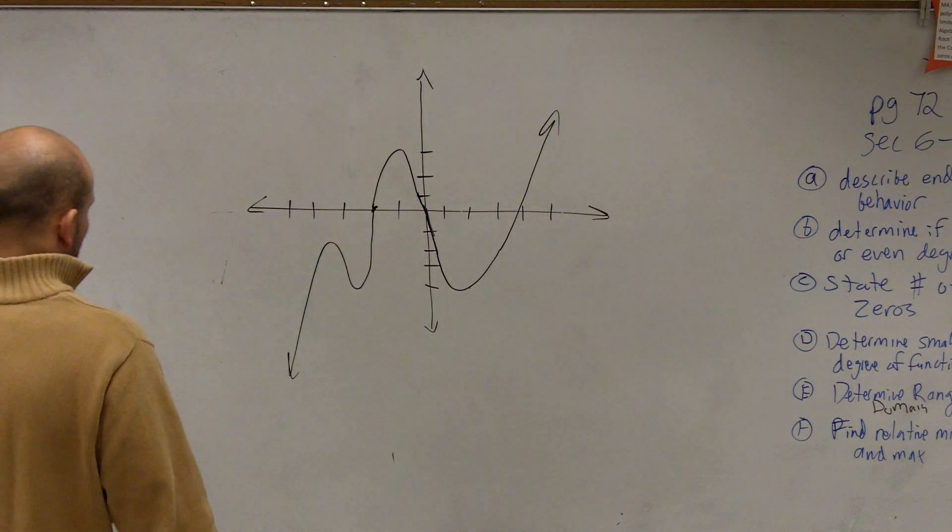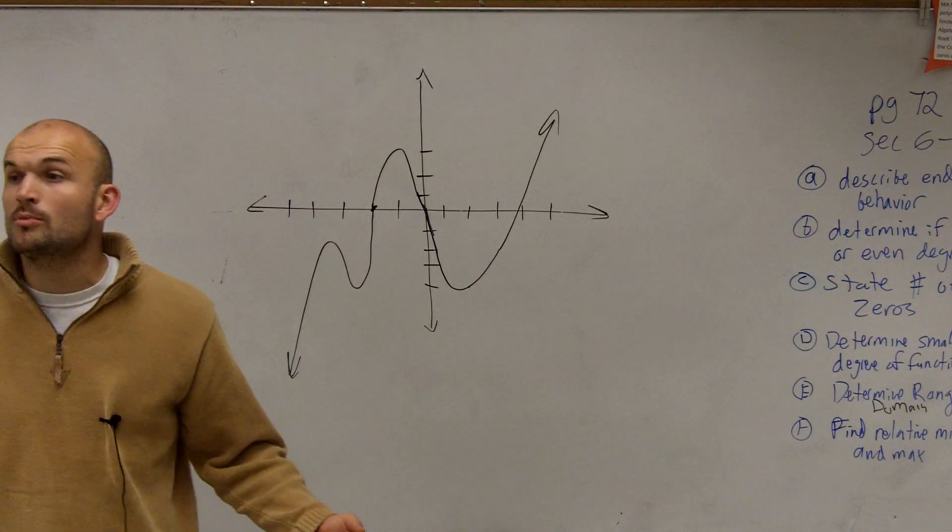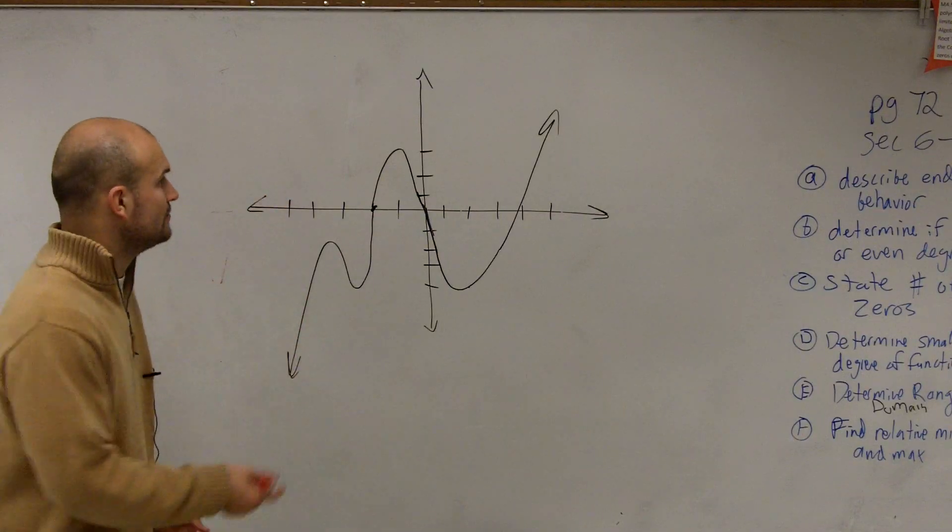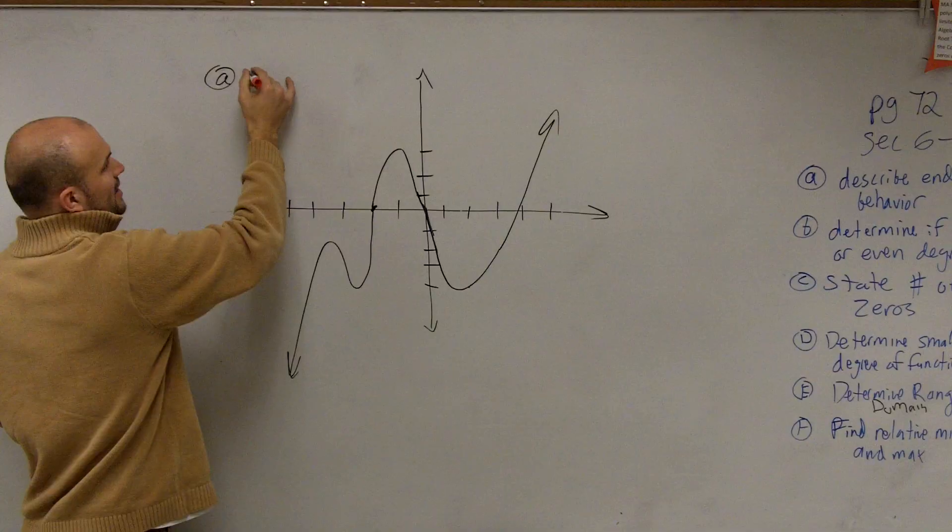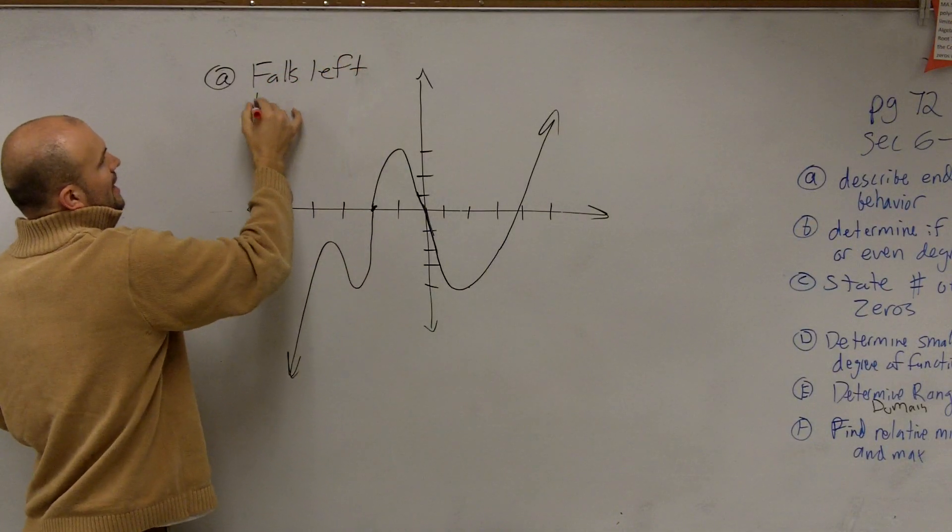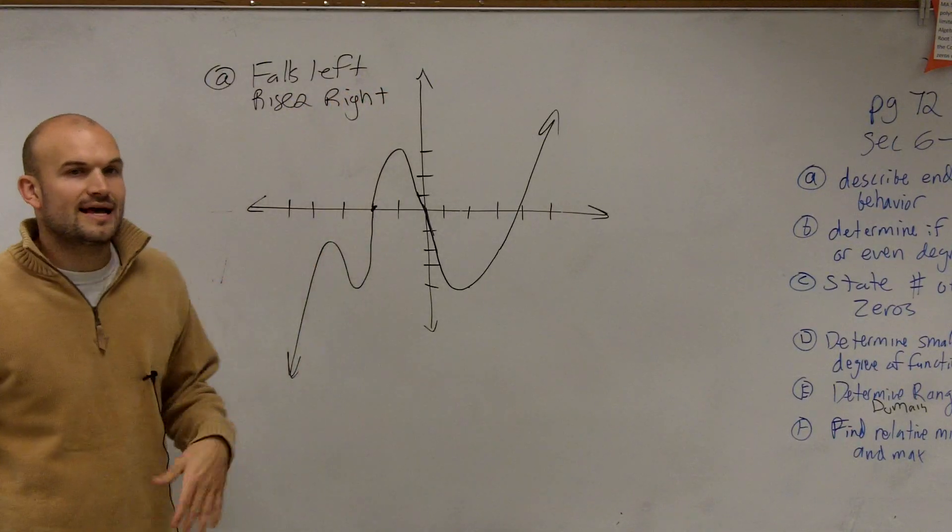So for a problem like this, you guys didn't have to answer the first three questions, but on your homework, you did. So let's practice it again. First of all, n behavior for this one is going to be falls left, rises right. So the graph falls left and rises right. Now, you didn't have to do this for this problem, so I'm just going to leave it like that.